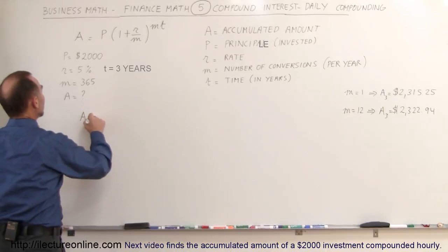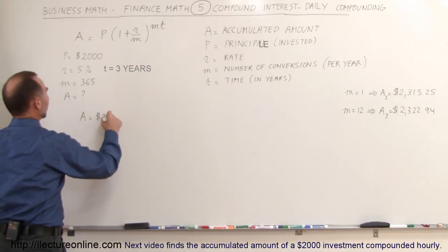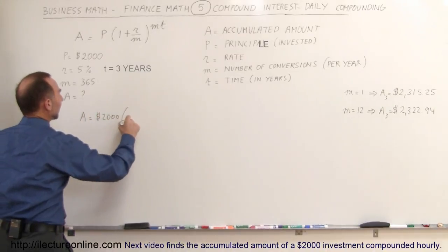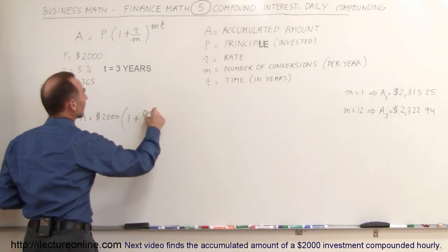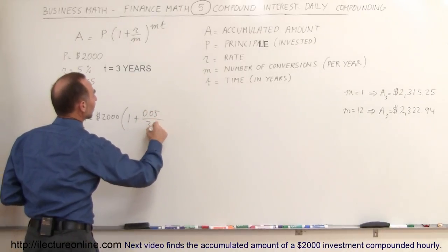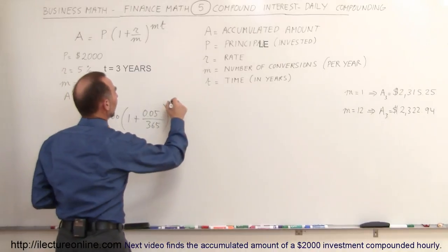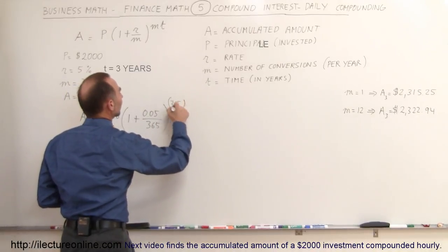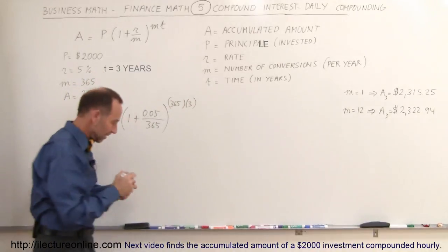So the accumulated amount would be equal to the $2,000 invested, times one plus the rate, 5%, divided by the number of conversions, 365 per year, raised to 365 times 3.